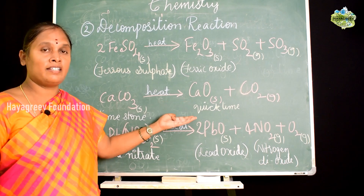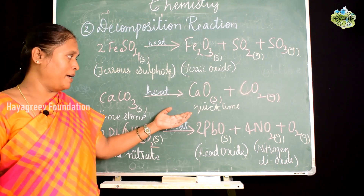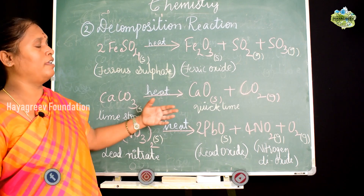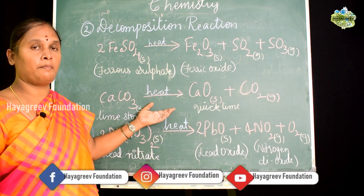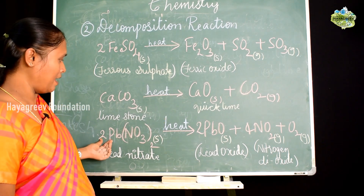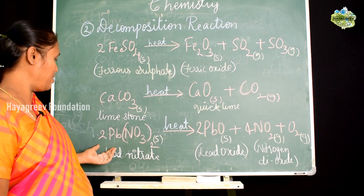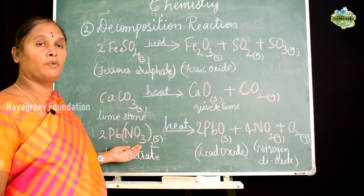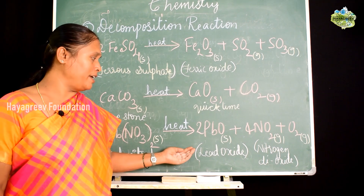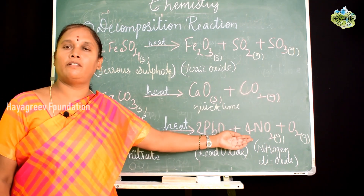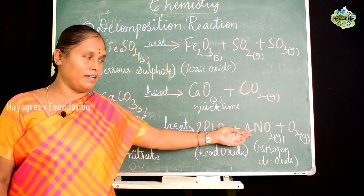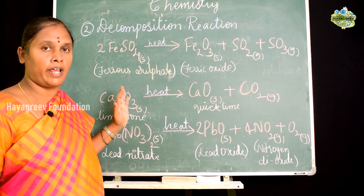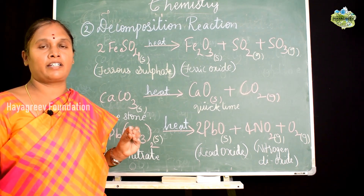The decomposition of calcium carbonate to form quick lime and carbon dioxide is very helpful in manufacturing cement. Since decomposition takes place upon dry heating and gases are liberated, this is termed thermal decomposition. Another example: lead nitrate Pb(NO3)2 when heated decomposes to form lead oxide PbO, nitrogen dioxide which is liberated as a colored gas, and oxygen is also liberated.